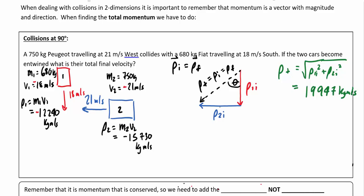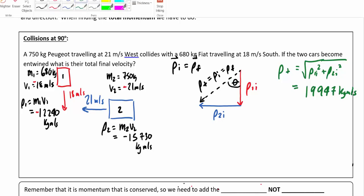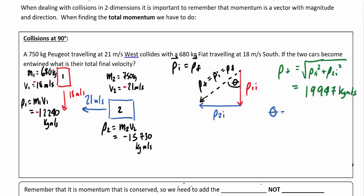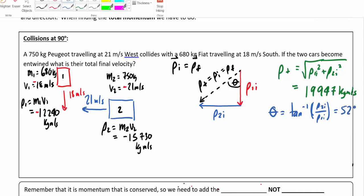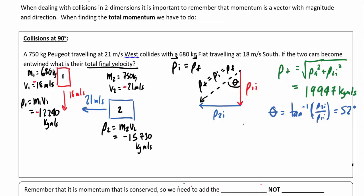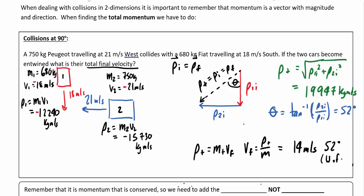Note that in two dimensions, when both vectors were negative and I square them, I lose that negative sign. We can't describe direction with positive and negative in two dimensions — that's why we need the angle. So theta equals inverse tan of P2 initial over P1 initial, which works out to about 52 degrees. The problem asked for total final velocity, so V final equals total momentum divided by total mass, giving about 14 meters per second at 52 degrees west of south.